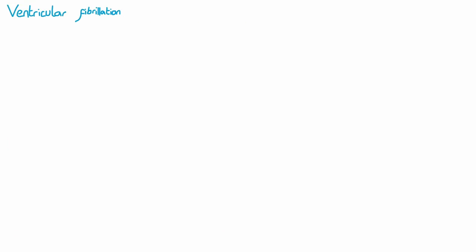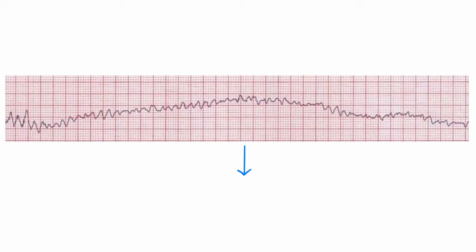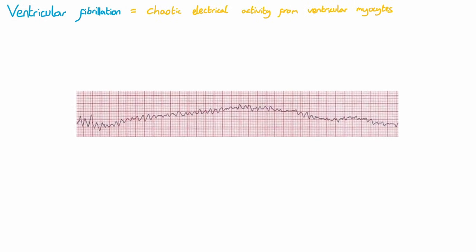Ventricular fibrillation is the last of the tachyarrhythmias we're going to cover. It's characterized as chaotic electrical activity from the ventricular myocytes. This is an essential ECG to recognize, as it often leads to cardiac arrest. In the context of exams, this is quite an easy one to recognize due to its chaotic appearance of fibrillatory waves. The vignette in an exam will most likely describe a patient who is unconscious or in cardiac arrest. A good way to remember the difference between VF and VT on an ECG is to think of VF as 'very funny' and VT as 'very tidy' — a good descriptor of what the ECGs look like.